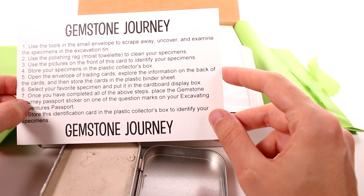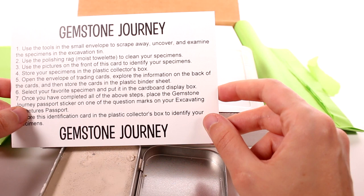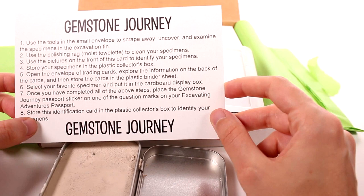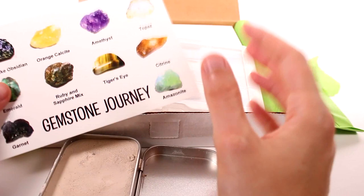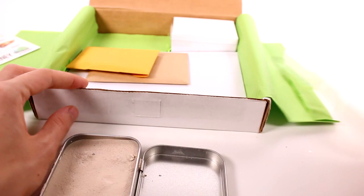Store your specimens in the plastic collector's box. Open the envelope of trading cards, explore the information on the back of the cards, and then store the cards in the plastic binder sheet. Select your favorite specimen and put it in the cardboard display box. Once you have completed all of the above steps, place the gemstone journey passport sticker on one of the question marks on your excavating adventures passport.